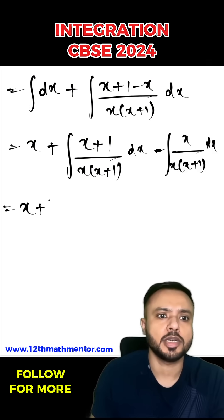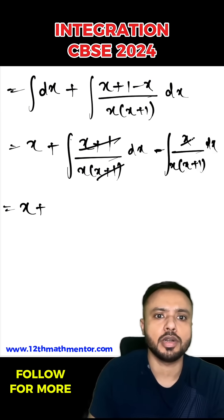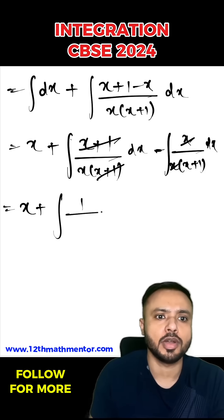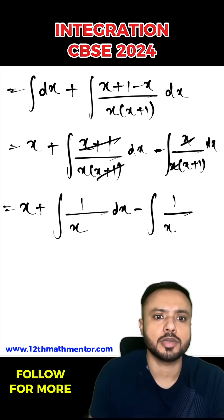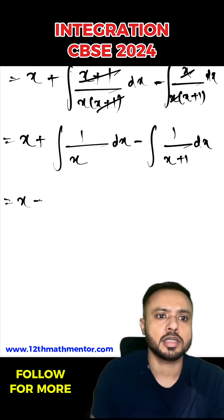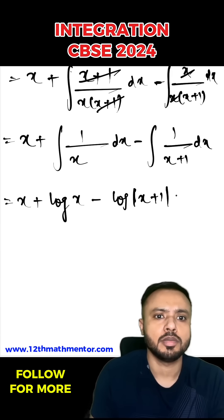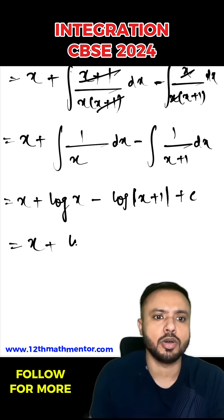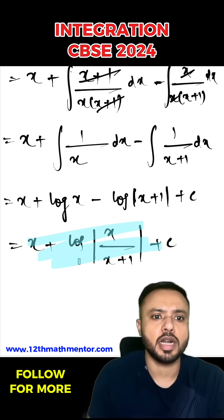The (x+1) terms cancel in the first integral and the x terms cancel in the second, leaving ∫(1/x) dx minus ∫1/(x+1) dx. This gives x + log|x| - log|x+1| + C. Using logarithmic properties, I can write this as x + log|x/(x+1)| + C, which is the desired answer.